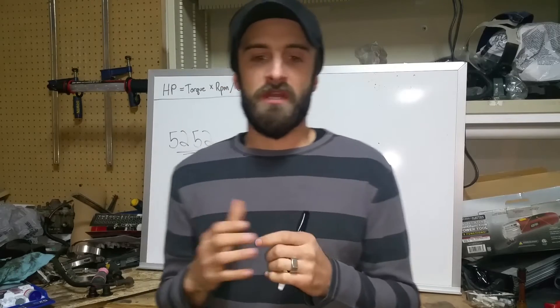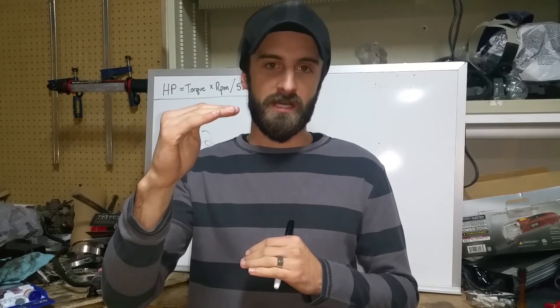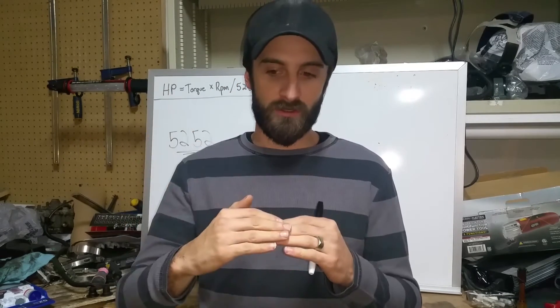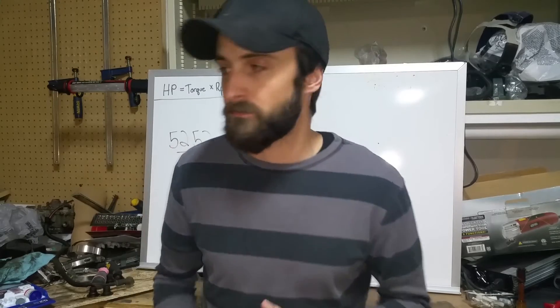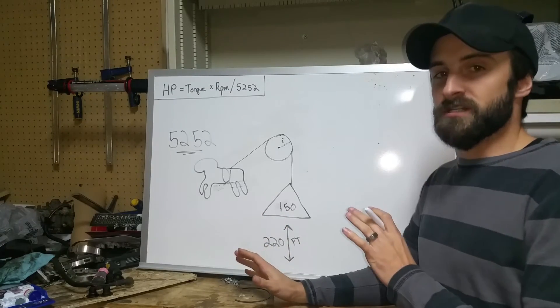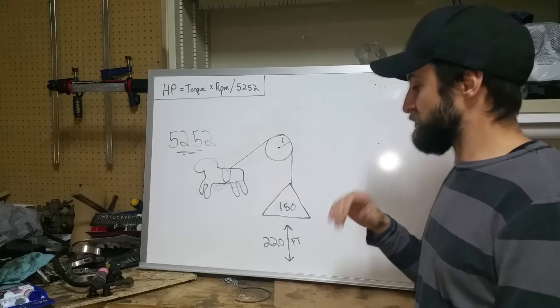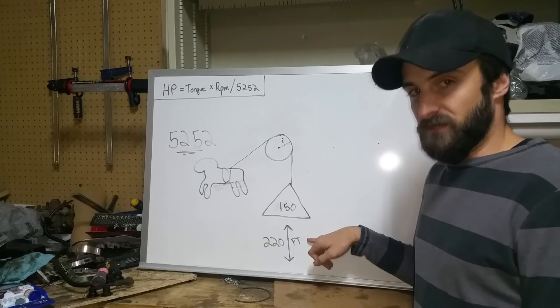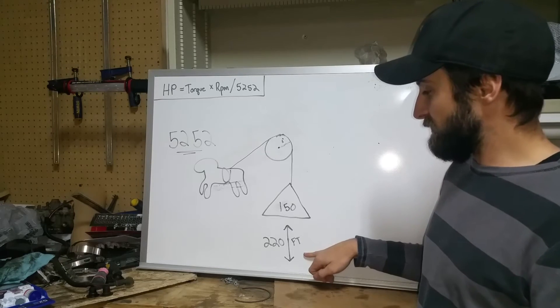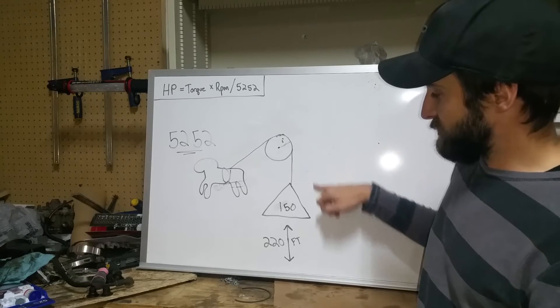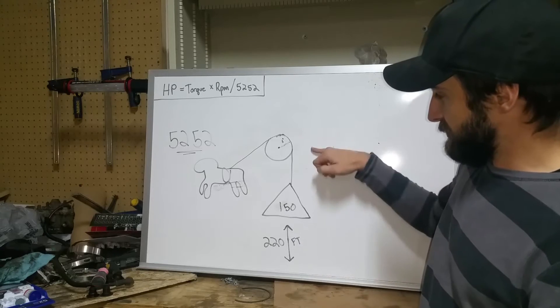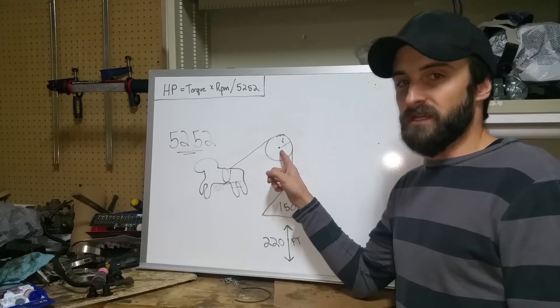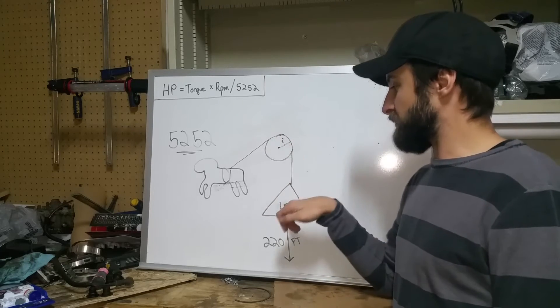Alright. So since a steam engine doesn't make linear power as a horse would when you're using a horse to pull something, it makes rotational power, you need a way to convert that linear distance into rotational power. So here's an illustration, and I'm going to use this to explain it. Here's our horse lifting 150 pounds, 220 feet in one minute. So in order to convert this linear distance that this 220 feet is, we're going to use a one foot radius circle to measure the linear distance.